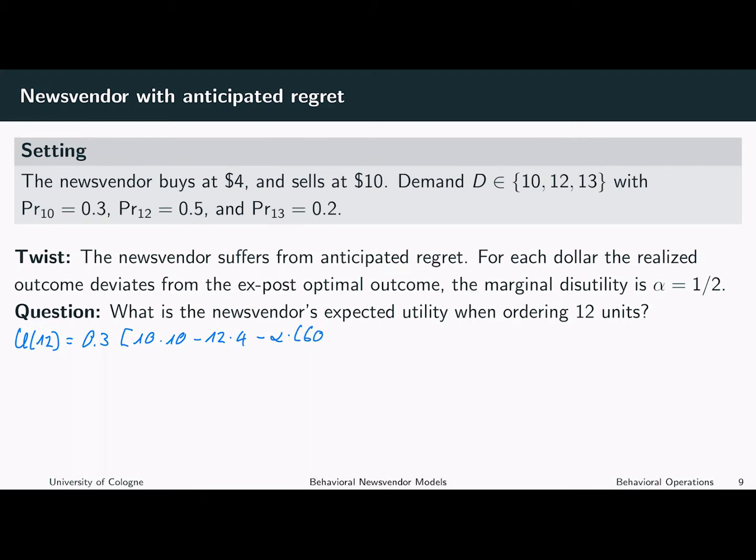Instead, she only made a profit of 52. So there's a difference of 8 between the optimal profit, the ex-post optimal profit, and the realized profit. In the other cases, with probability 0.7, the demand or the observed demand is 12 or larger.